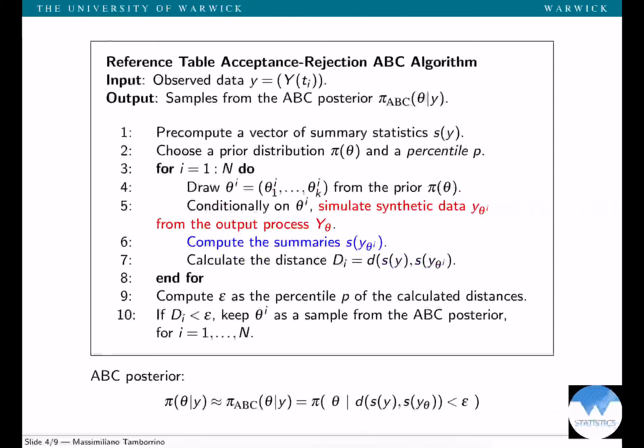The idea goes as follows: sample a parameter theta_i from the prior and conditionally on this value, simulate synthetic data from the model. Then compute the distance between some summary statistics of the original reference data and summary statistics of the simulated synthetic data. Keep theta_i as a realization from the ABC posterior only if the distance is smaller than some epsilon. We're dealing with a reference table acceptance-rejection algorithm detailed here in this slide.